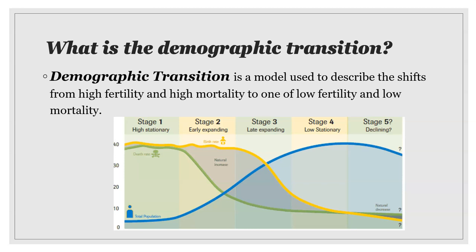Stage five is where a country experiences an overall loss to its population. It is more of a theory than something we're necessarily seeing fully in action. In stage five, death rates become higher than birth rates. The economy is the driving force behind further limits on family size, as the high cost of raising a family in cities and opportunities for employment delay childbearing. Birth rates decline well below the replacement level of 2.1 children per woman, as women opt for education and careers.